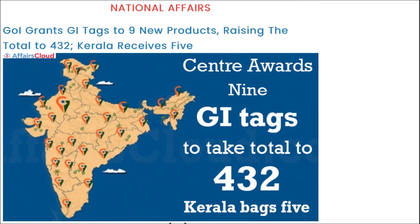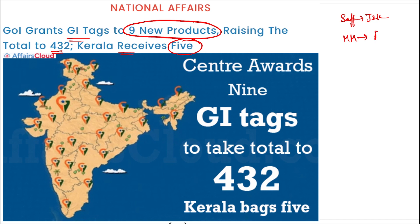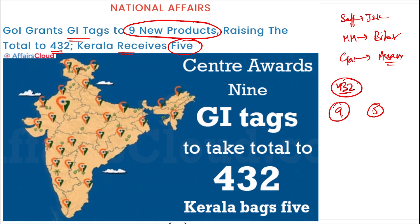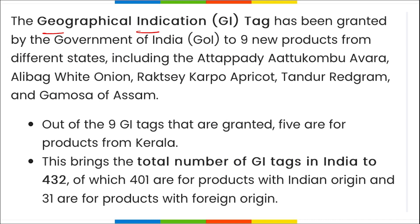Now for today's current affairs — national affairs first. The Government of India recently granted GI tags to nine new products, raising the total to 432 GI products in India. Kerala received five of the nine new GI tags. The Geographical Indication tag is recognized by the World Trade Organization and refers to a product of a particular origin — indicating that the product belongs to a particular state, nation, or area.